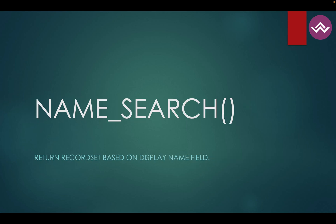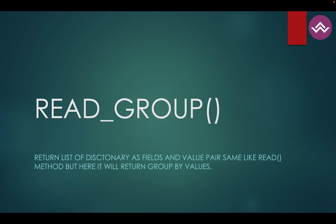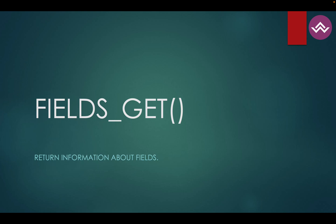The name_search method is also very popular when searching records in relational fields — we will deep dive into that in a separate session. The read method specifically fetches data from the database not as a record set but as a dictionary of key-value pairs, similar to JSON. The read_group method is used when you want to group data by specific fields. The fields_get method lets you retrieve field definitions along with their metadata.